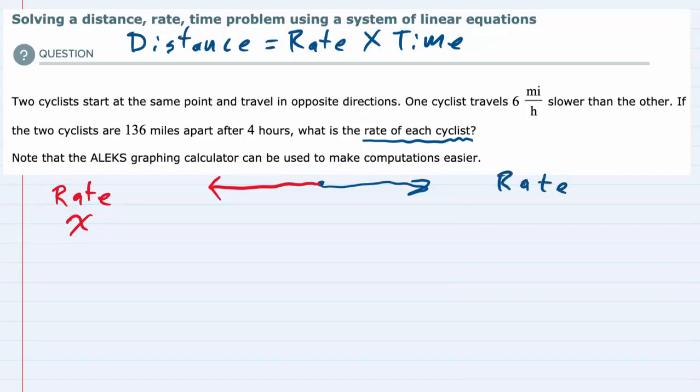And cyclist 2 has a rate of y miles per hour. And then we can look back at the question and see that one cyclist travels 6 miles per hour slower than the other one.